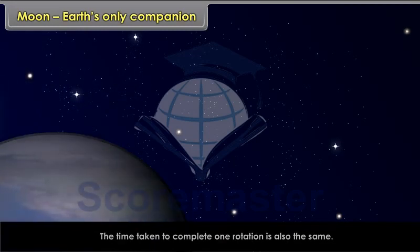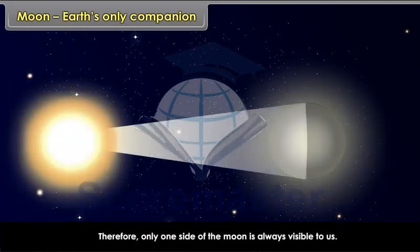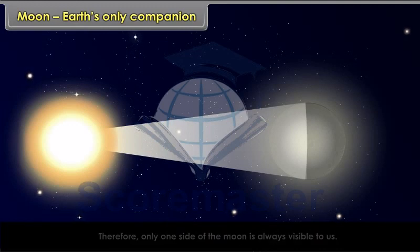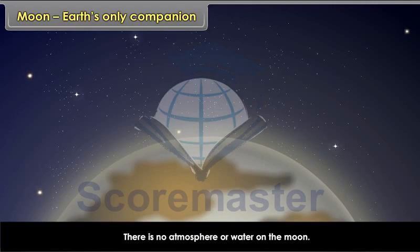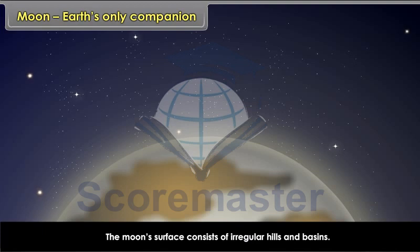The time taken to complete one rotation is also the same. Therefore, only one side of the Moon is always visible to us. There is no atmosphere or water on the Moon. The Moon's surface consists of irregular hills and basins. There is no soil either.